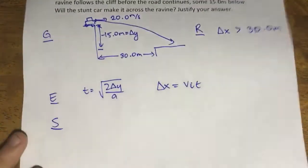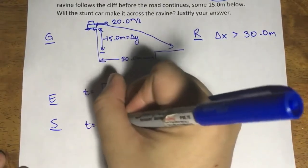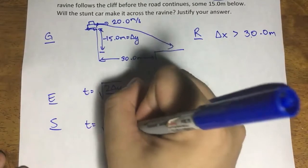To solve, let's use our two-punch solution. First, we get the time: T equals square root of 2 delta y over A.